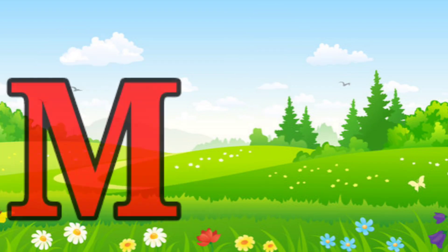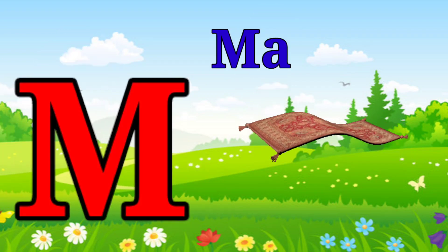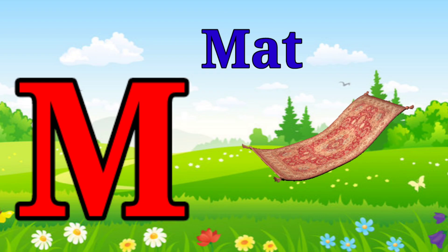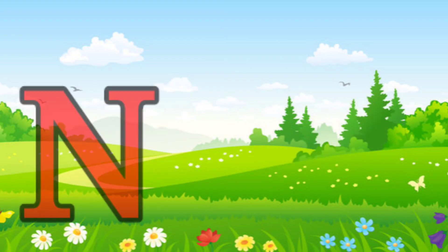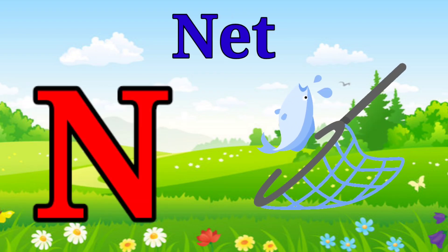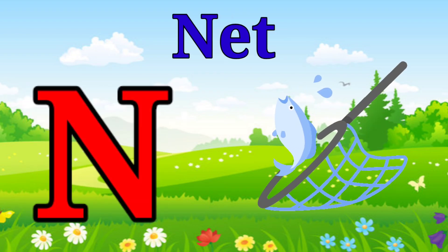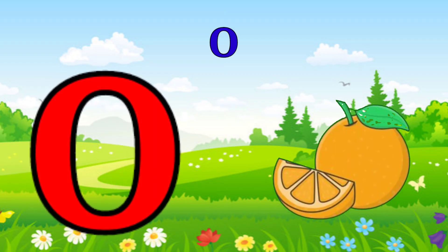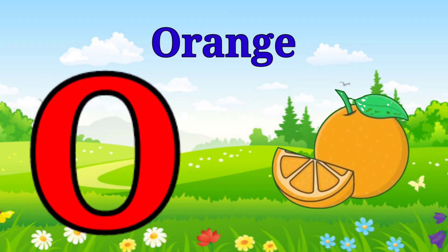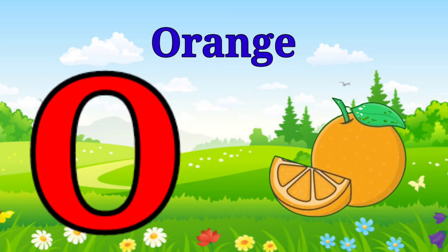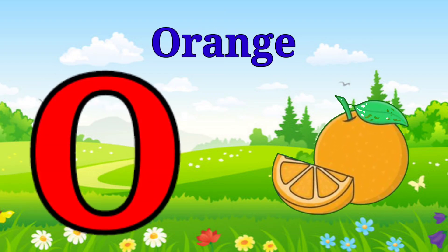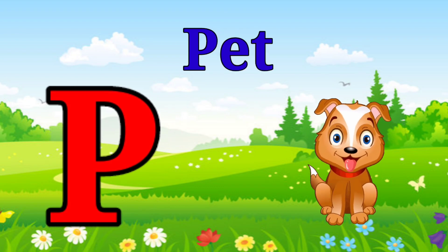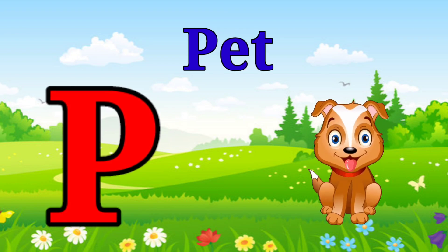M is for mat, m-m-mat. N is for net, n-n-net. O is for orange, o-o-orange. P is for pet, p-p-pet.